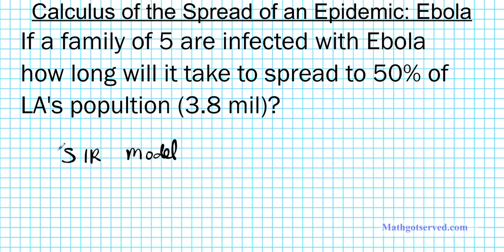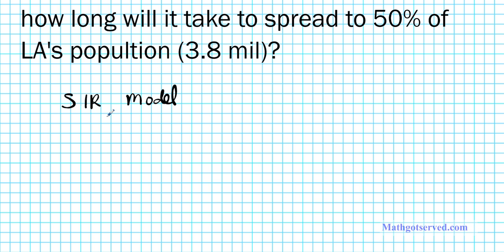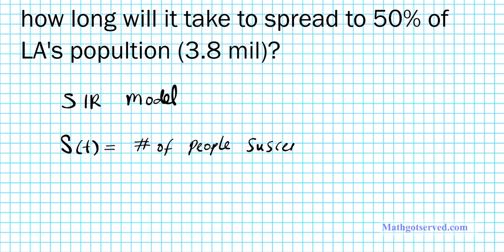You might wonder what does SIR mean. Well, SIR basically represents the three functions used to define the rate at which the different variables or functions change when we're looking at the spread of a disease. S, the first letter, represents a function. This function tells you the number of people that are susceptible, or yet to be infected by the epidemic — the number of people susceptible or yet to be infected.